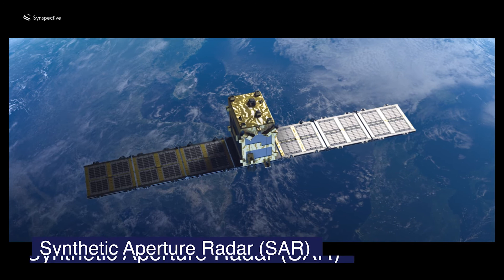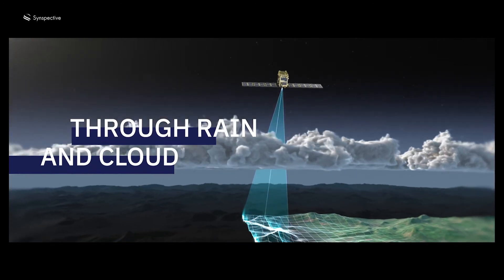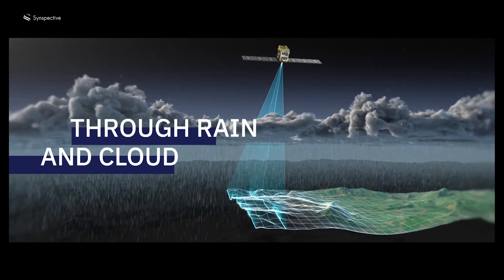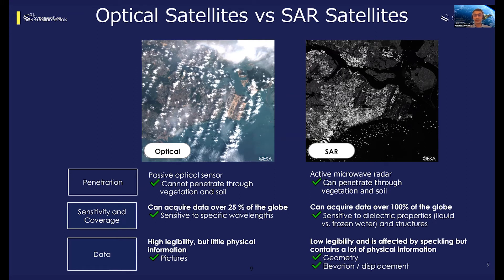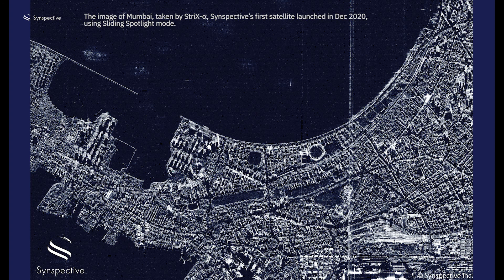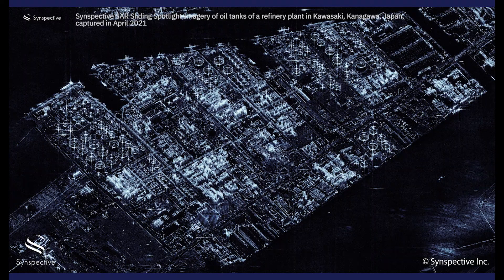So how do SAR satellites and optical satellites compare? Well, in terms of penetration, SAR satellites can penetrate through vegetation, snowpacks, and soil on the ground, whereas optical satellites can basically see only the top of the medium. SAR satellites are also sensitive to dielectric properties and structures. Topography can also introduce some distortions in SAR images, though image processing tools and techniques are available to deal with most of these issues.